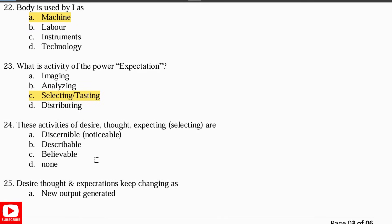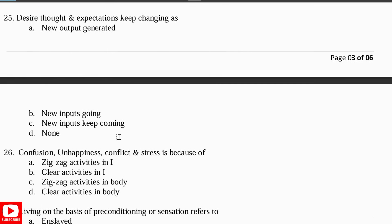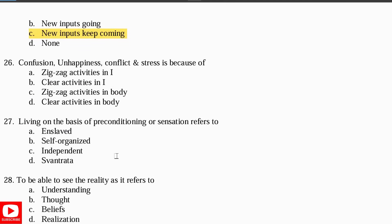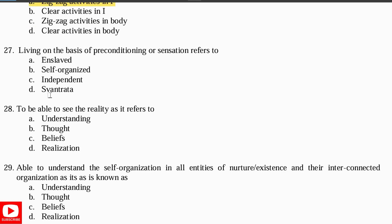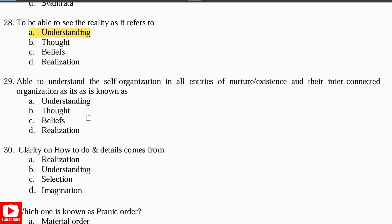What is the activity of the power of expectation? It is selecting or tasting. The activities of desire, thought, and expectation keep changing with new inputs coming in. Confusion, unhappiness, conflict, and stress are because of zigzag activities in I. Sensation refers to living on the basis of the pre-condition of being enslaved. To be able to see the reality as it is refers to understanding. To be able to understand the self-organization in all entities of existence and their interconnected organization as it is — that is known as realization.